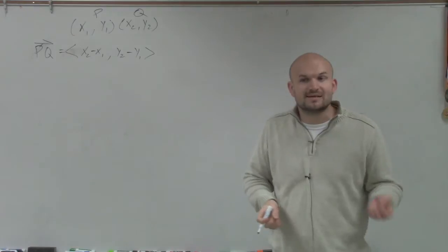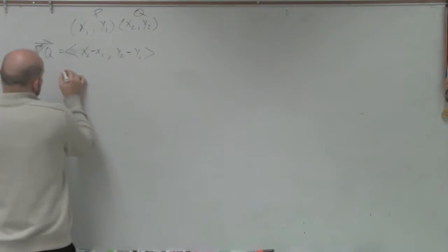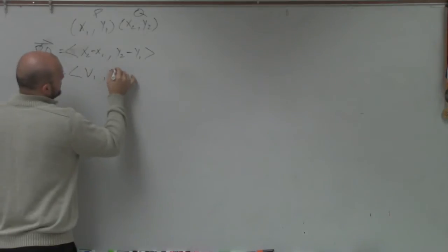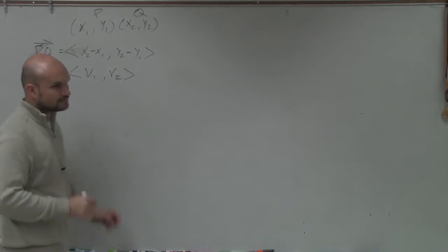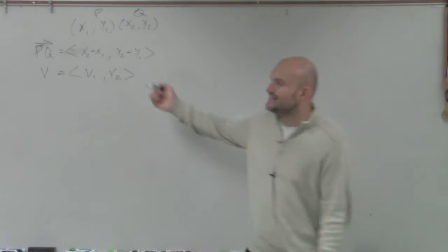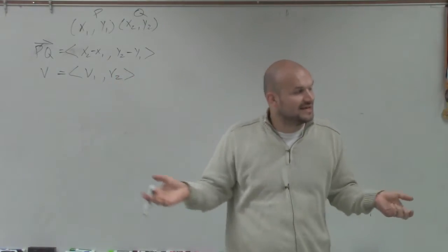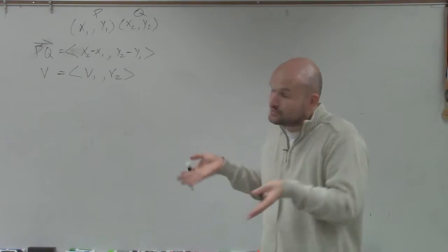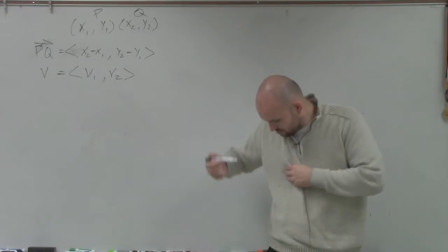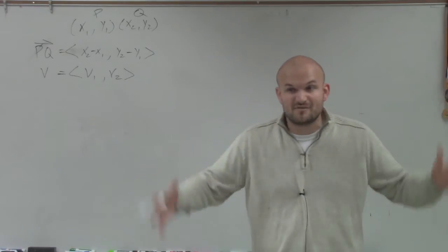And what was nice about component form is that the initial point is always at 0. And we changed these two to write this as v equals v1 comma v2. So we changed it to now represent, instead of writing it as pq, we gave the vector a name. Instead of giving it the name of the two points, we gave it a name like v. And we wrote that the difference of your x-coordinates and your y-coordinates as v1, v2. That was our vector.